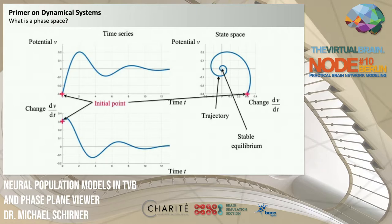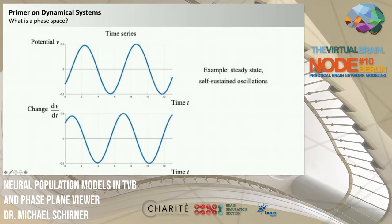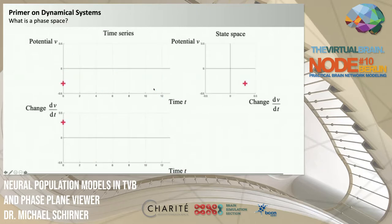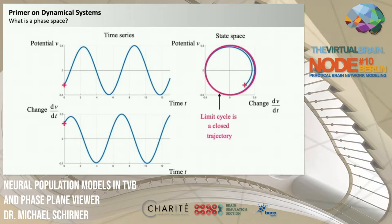There are different kinds of geometrical objects in state space. Fixed points can be attractive, pulling the state toward them, or repulsive, pushing the state away. In the previous example we saw a damped oscillation where amplitude weakened over time. In contrast, a self-sustained oscillation maintains constant amplitude over time and maps to a closed trajectory — a closed circle — in state space, called a limit cycle.